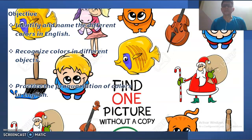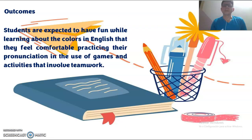Objectives: identify and name the different colors in English, recognize colors and different adjectives, practice the pronunciation of the colors in English. Outcomes: students are expected to feel comfortable practicing the pronunciation and the use of colors in activities that involve teamwork.